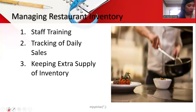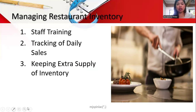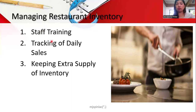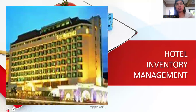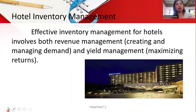To manage inventory effectively, we need to train our staff, track our sales, and keep extra supply. Training staff is critical so they perform well in ordering, inventory management, food production, and guest service. We use inventory sheets or POS systems with inventory management software, and always maintain a safety net or emergency par for events. This is how we manage inventory in our restaurant.